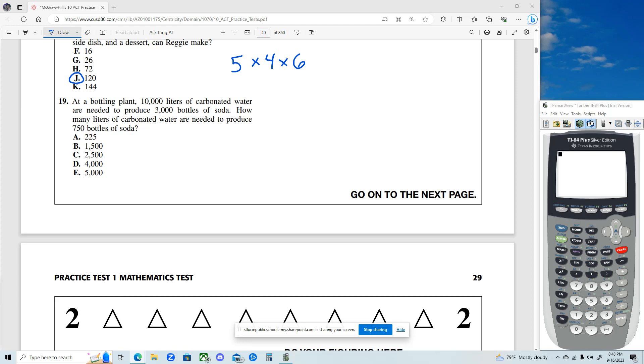Question 19. At a bottling plant, 10,000 liters of carbonated water are needed to produce 3,000 bottles of soda.